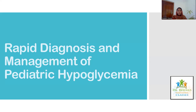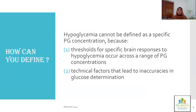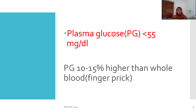So, pediatric hypoglycemia — why is it so important? It is one of the major metabolic emergencies at any age, leading to neurological sequelae. It is also an important presenting feature for many underlying endocrine or metabolic problems. Hypoglycemia cannot be defined as a specific plasma glucose concentration, because the thresholds of specific brain responses to hypoglycemia occur across a wide range of plasma glucose concentrations. There are also technical factors which lead to inaccuracies in glucose determination. For all practical purposes, we take plasma glucose less than 55 mg/dL as hypoglycemia in pediatrics.